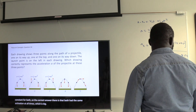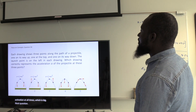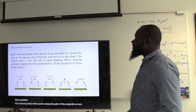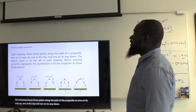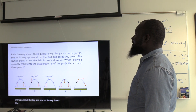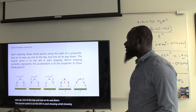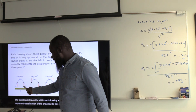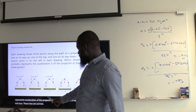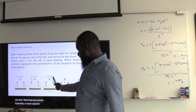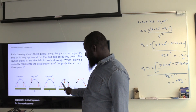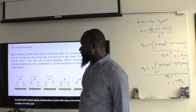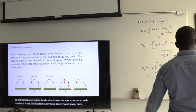Each drawing shows three points along a projectile's path: on the way up, at the top, and on the way down. Which drawing correctly represents acceleration? Acceleration is never zero at the top, so drawings showing that are wrong. Acceleration is never upward. The correct answer is number 4 — acceleration always points downward at every point.